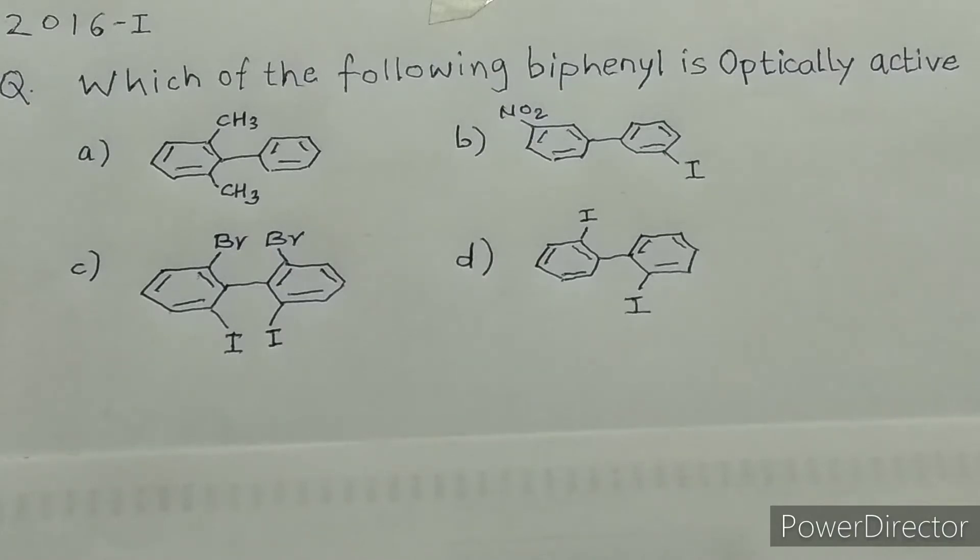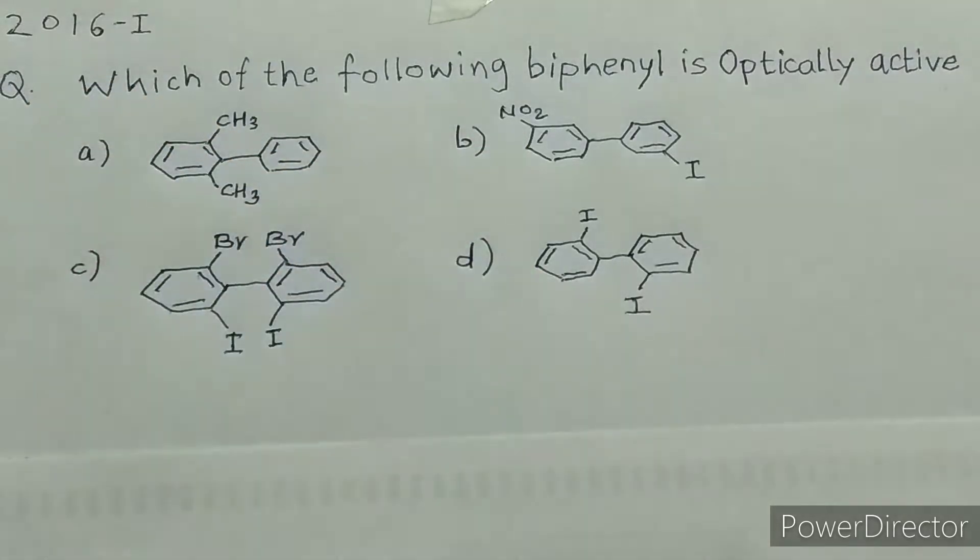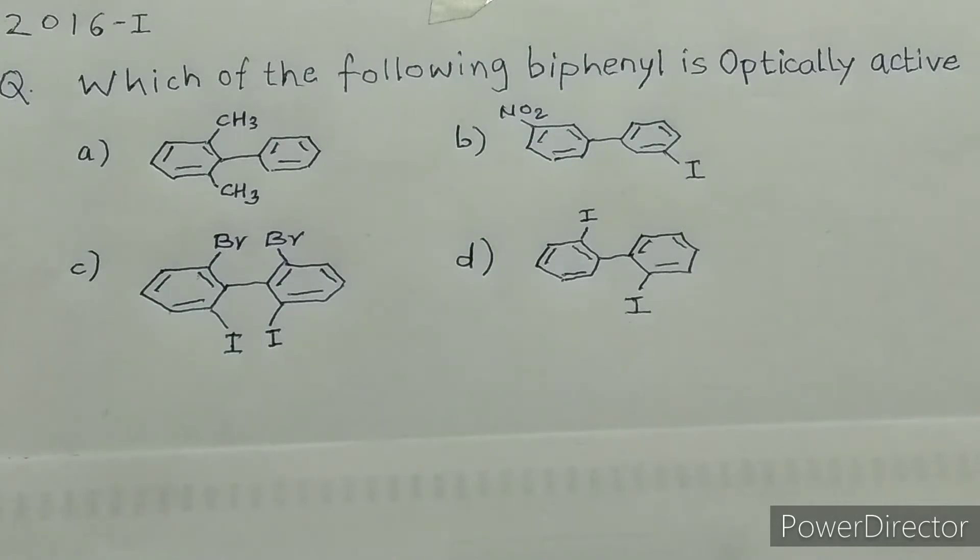2016 NEET question: which of the following biphenyl is optically active? They have given four biphenyl structures. Out of these four structures, we have to decide which biphenyl is optically active.